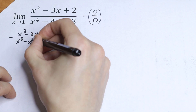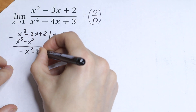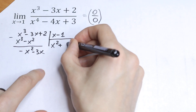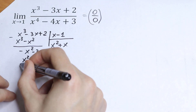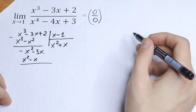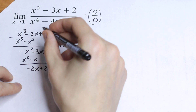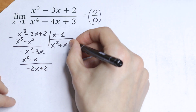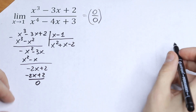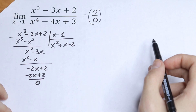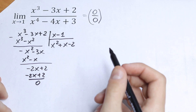We have x-cubed minus x-squared. Subtracting, we get minus x-squared minus 3x. Multiplying by x gives x-squared minus x. As a result we have minus 3x minus minus x, which is minus 2x plus 2. Multiplying by minus 2 gives minus 2x plus 2, which is 0. So x-cubed minus 3x plus 2 can be written as (x-1) times (x-squared plus x minus 2).